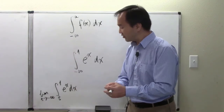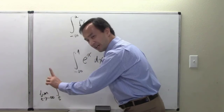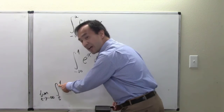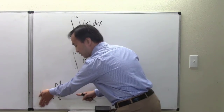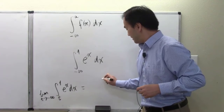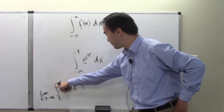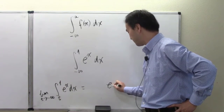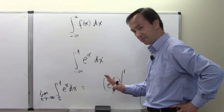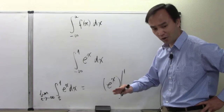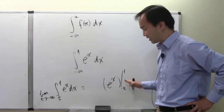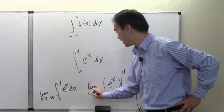Similar to the earlier approach, this problem is set up as a definite integral from t to a finite upper end of one. We use the fundamental theorem of calculus on this part — ignoring the limits work for now. The anti-derivative of e to the x is e to the x, evaluated from t to one.